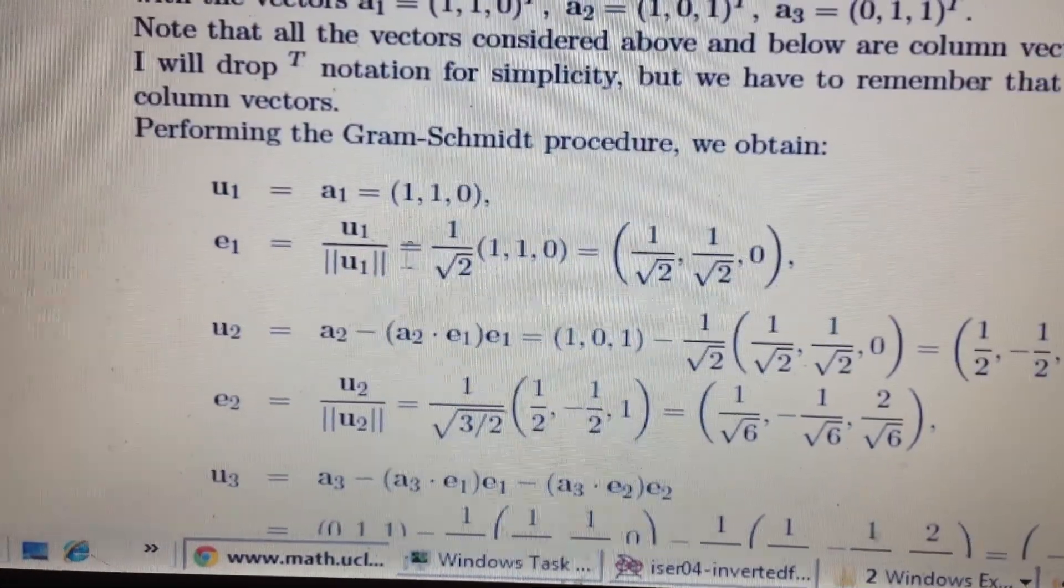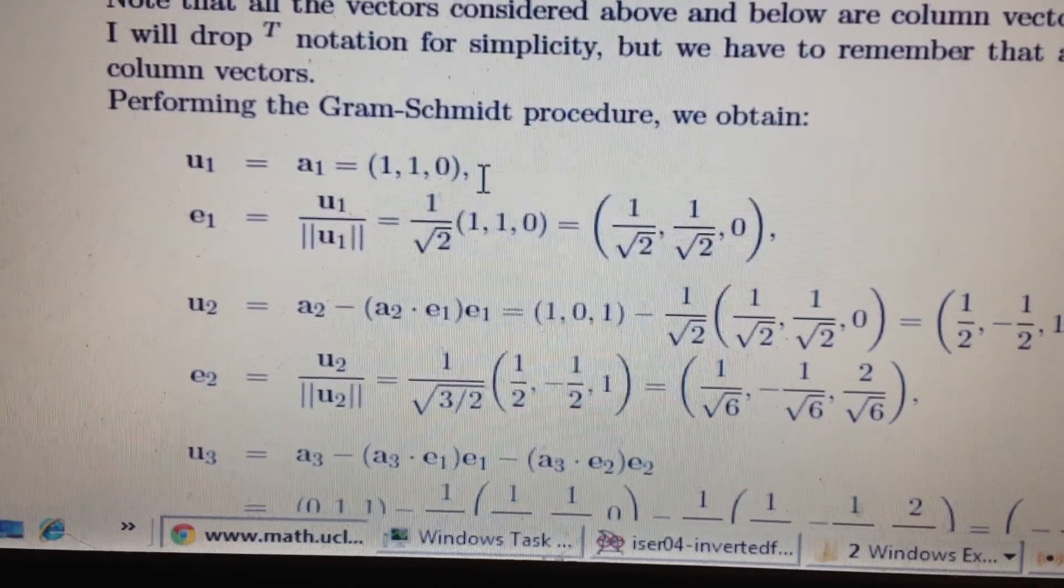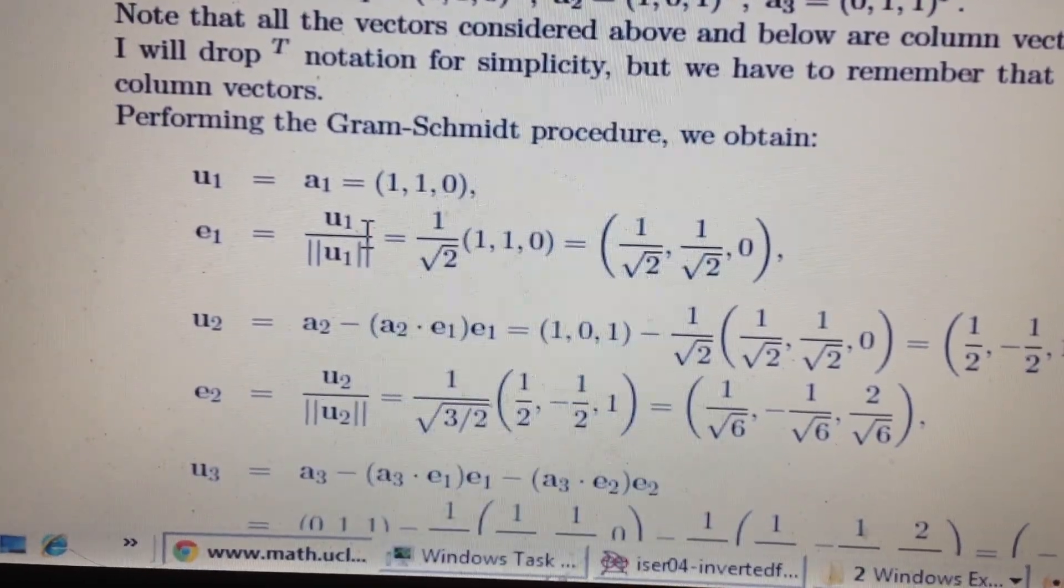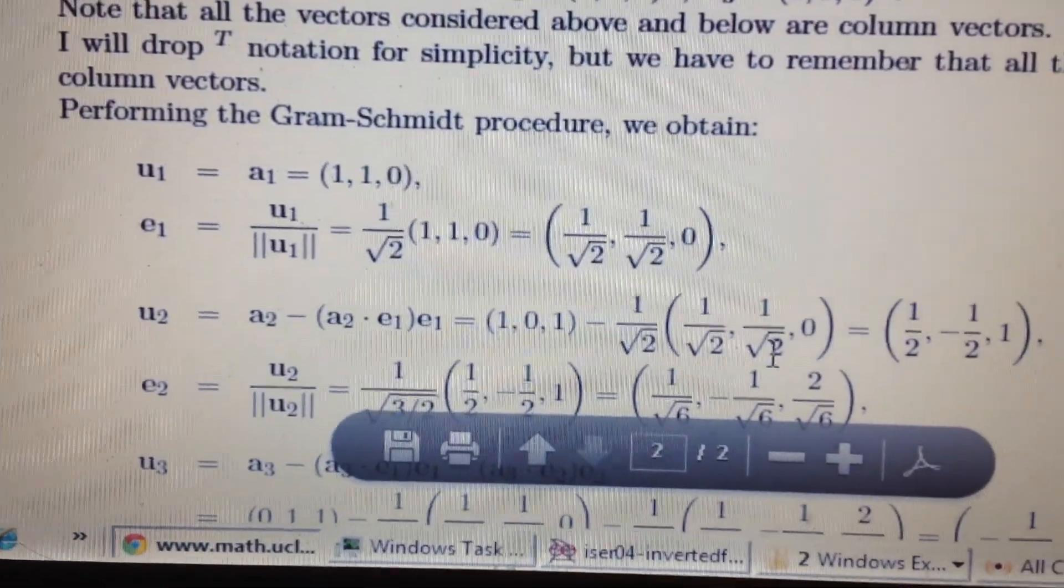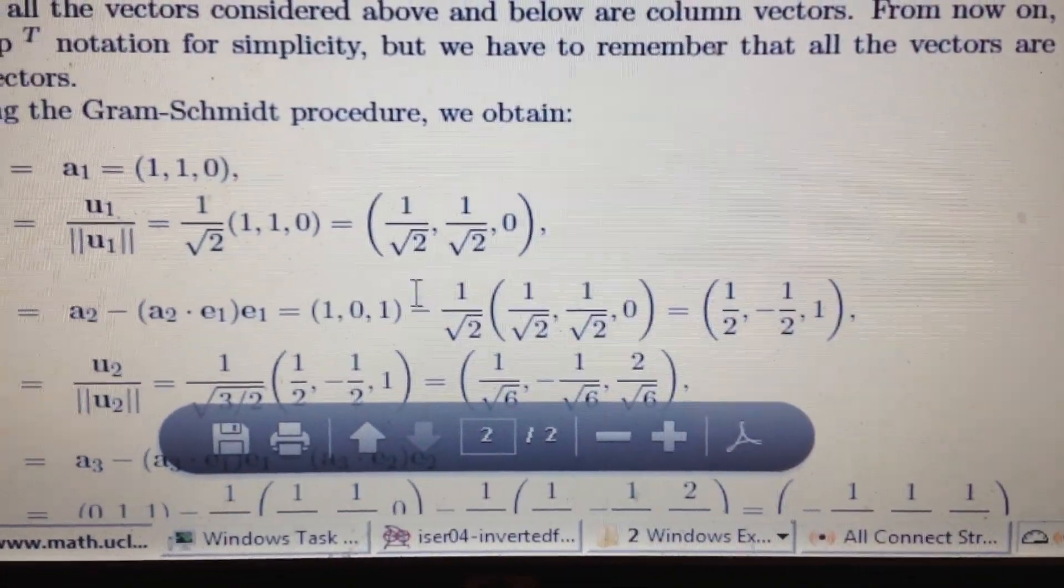And so we apply the Gram-Schmidt as before. We find the directions and compute the two independent individual vectors.